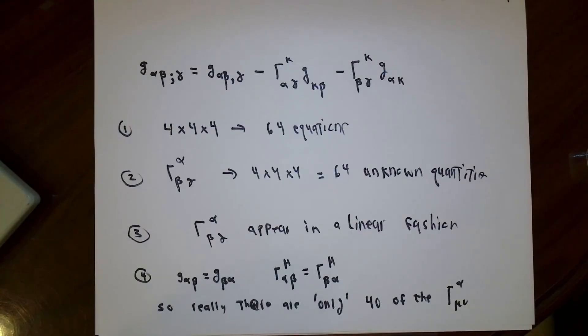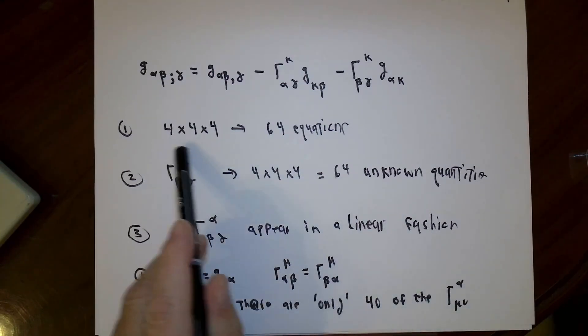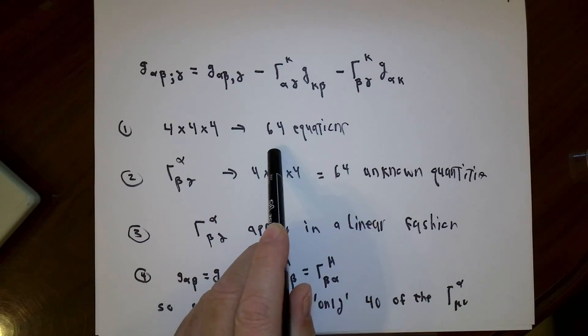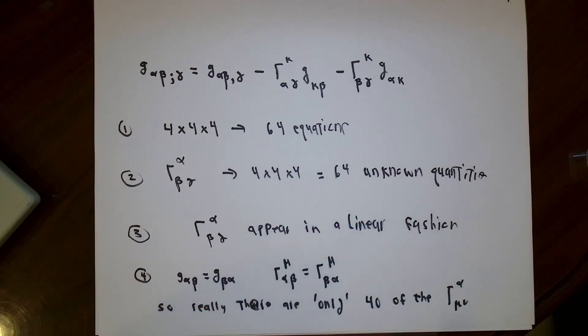Before proceeding, I want to make just a few comments. If we're doing relativity, for instance, each index can take on four values, so there are going to be 64 of these g_αβ;γ quantities to look at. Also, 4 times 4 times 4 is 64. These are the number of Christoffel symbols.